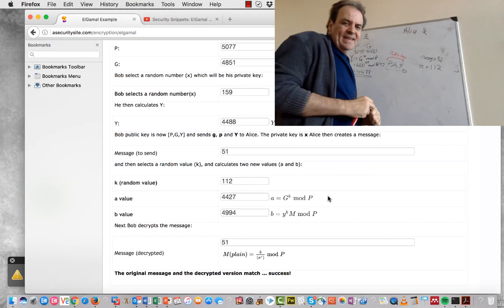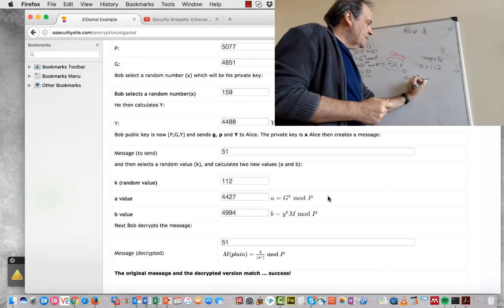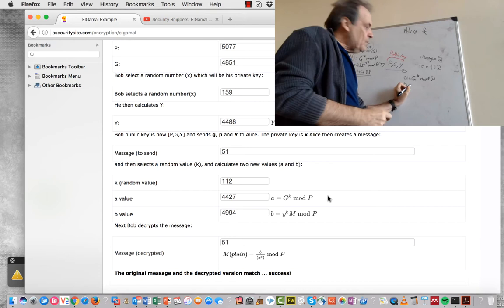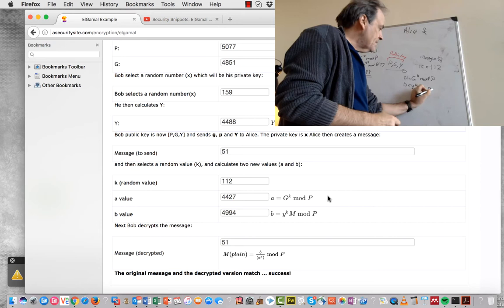So she calculates two values. In this case G to the power of K mod P. P was what Bob sent. And then B is equal to Y to the power of K, Y to the power of K mod, take the message, and then take the mod of P. So it's Y to the power of K multiplied by the message.